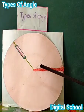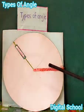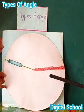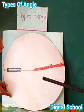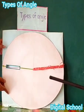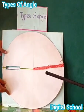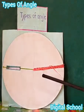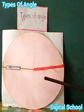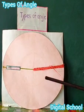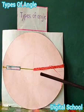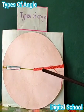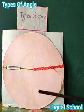Assalamu alaikum, I am Asuna. Today we will learn about types of angle. Dear friends, look at the board. This is a straight angle. The definition of a straight angle: an angle that measures 180 degrees is called a straight angle. In the figure, ABC is called a straight angle. Thank you.